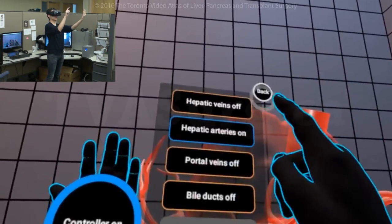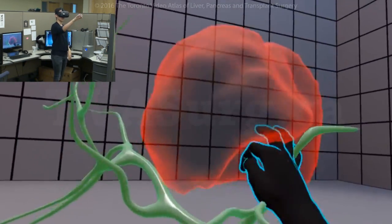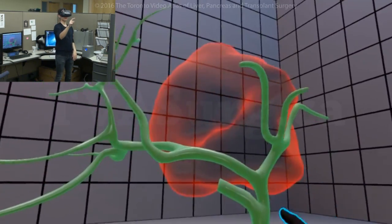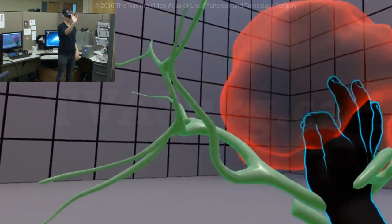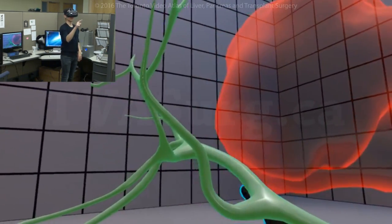We look at the bile ducts, right here. Let's look at it at an inferior angle. You can see the left hepatic duct here. And then we can take a look at the right duct, right here. Notice how close it runs to the tumor.